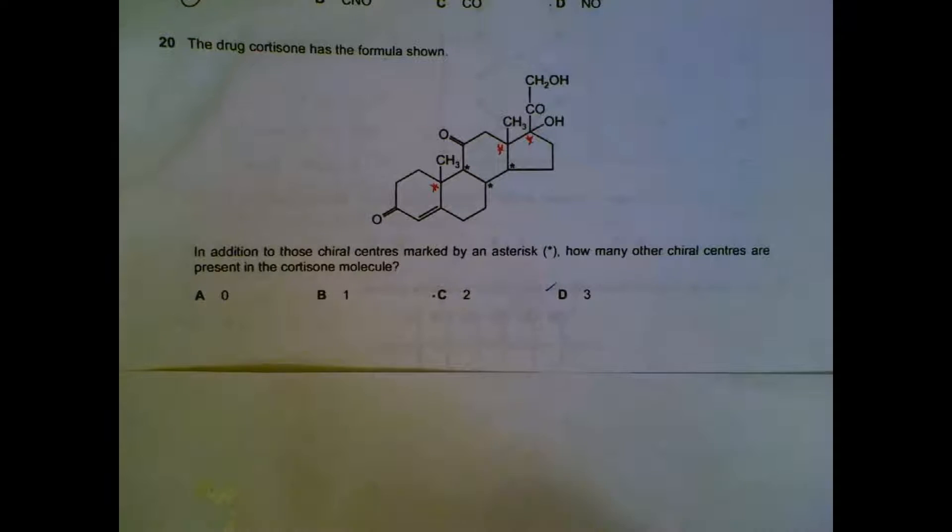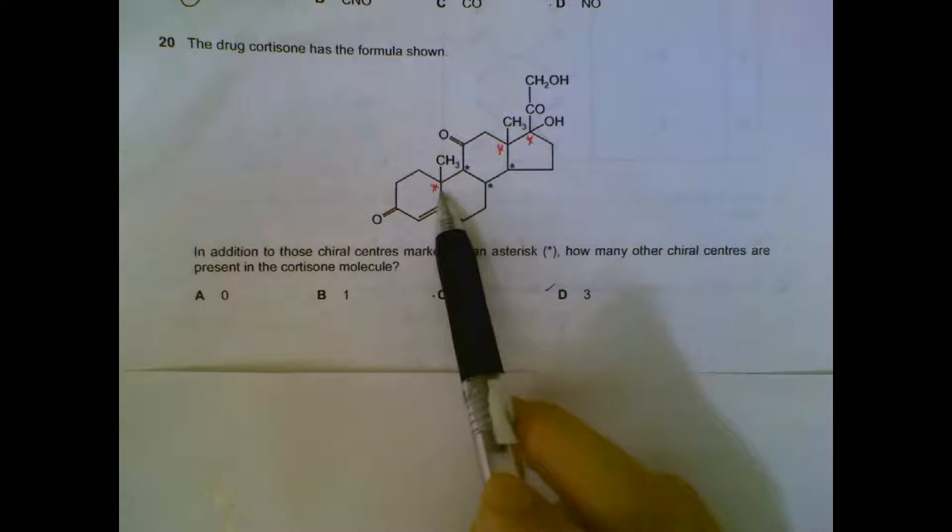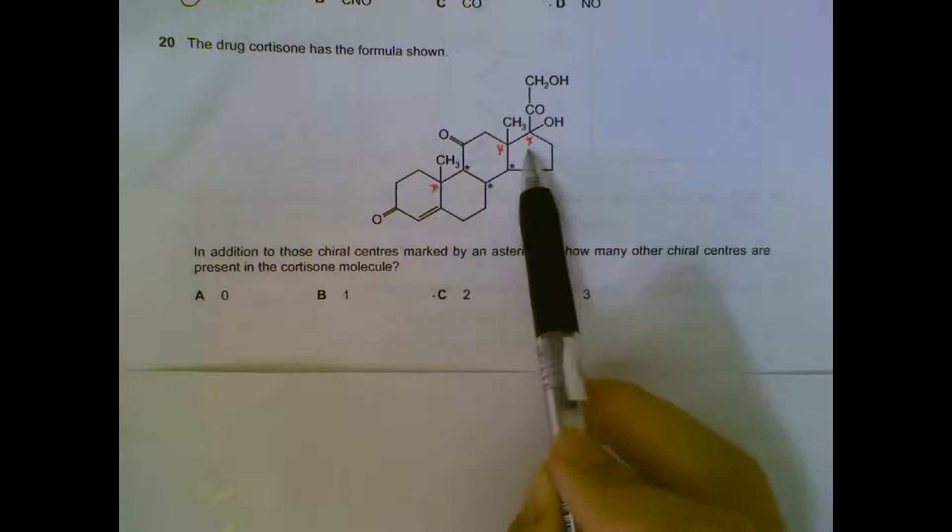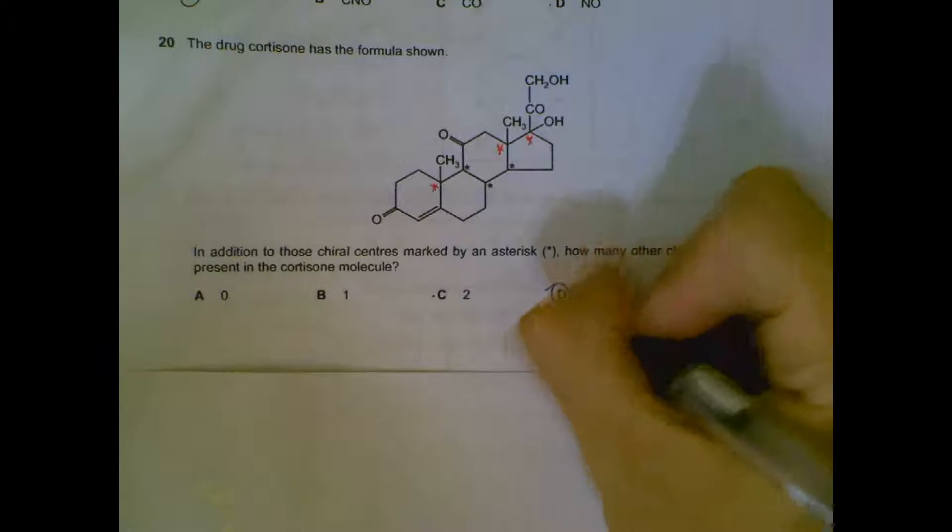Question 20, looking at the chiral centers, joined to four different groups. I have marked out the chiral centers. So look at the places where there are Y junctions, marked in red. So these are the extra chiral centers. We have a total of 3 of them.